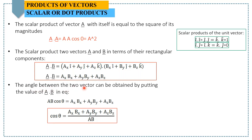To find the angle between two vectors, we write a dot b equals a times b times cosine of theta, which equals ax·bx plus ay·by plus az·bz. From this, cosine of theta equals (ax·bx plus ay·by plus az·bz) divided by the product of the magnitudes a and b. This is how we find the angle between both vectors.